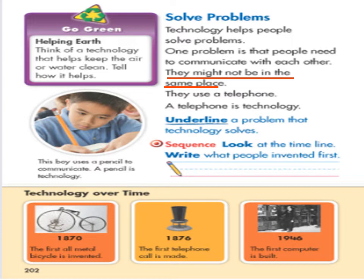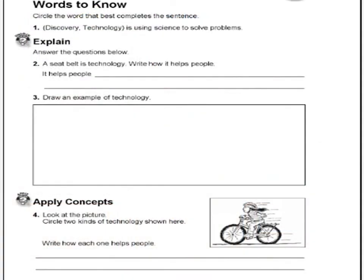Sequence. Look at the timeline — write what people invented first. Look at the picture: 1870, the first invention. What did people invent first? Look at the picture from 1870.